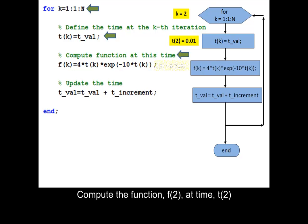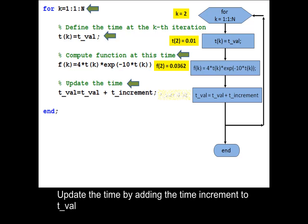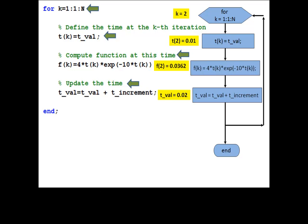Compute f of 2 at time t of 2. Update the time by adding the time increment to tval. Return to the beginning of the loop.